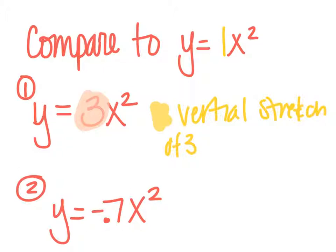And then if I look at this other one, my negative 0.7, a couple things. First of all, let's focus on the 0.7 here. This 0.7, that's going to be less than 1, so it's going to be a vertical compression. It's a vertical compression of 0.7.